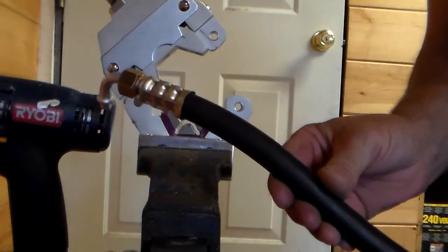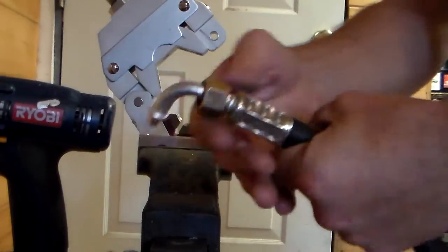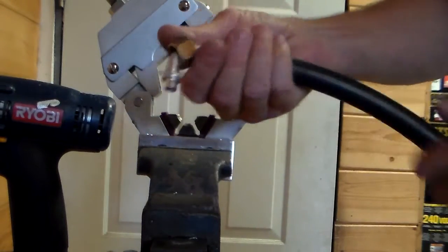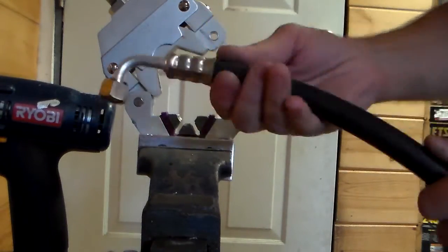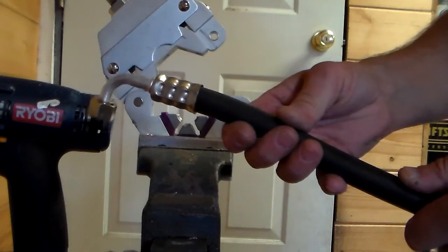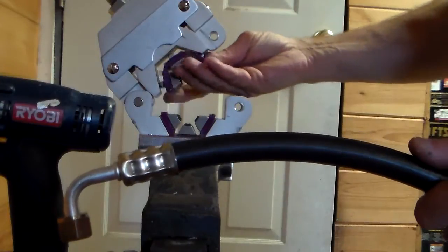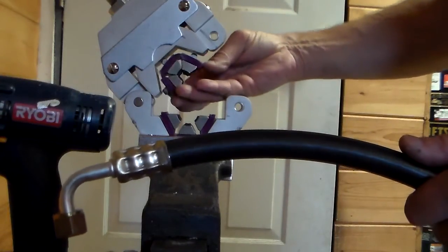After you crimp it, that's what it looks like. That thing's never going to leak or come loose. That's all there is to it. What I do is pull all the same size hoses, crimp them all - they're all marked - and then start assembling the whole system.